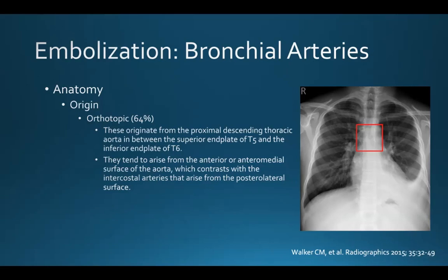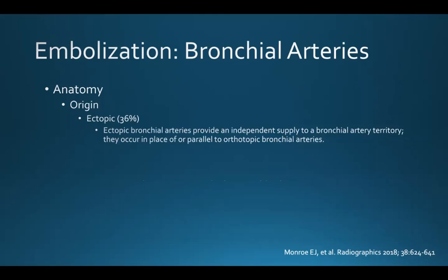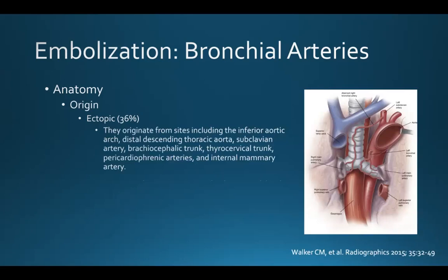When looking at the bronchial arteries, 64% are considered orthotopic and originate from the proximal descending thoracic aorta between the superior endplate of T5 and the inferior endplate of T6. They tend to arise from the anterior or anteromedial surface of the aorta, which contrasts with the intercostal arteries that arise from the posterolateral surface. The remaining 36% of bronchial arteries are ectopic, providing an independent supply to a bronchial artery territory — occurring in place of or parallel to orthotopic bronchial arteries.